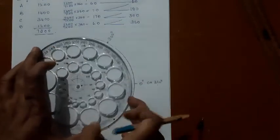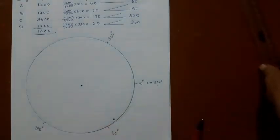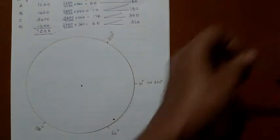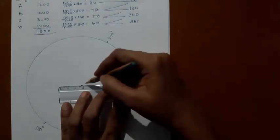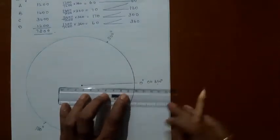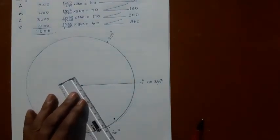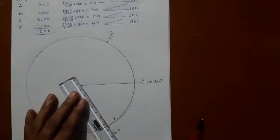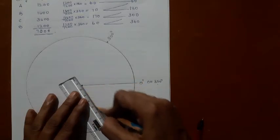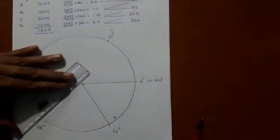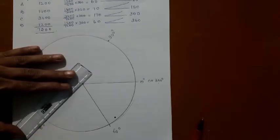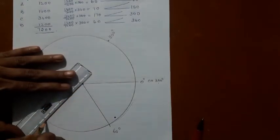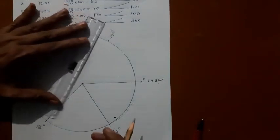Now join the points with the center. Draw a line from the center to the circumference of the circle where you have pointed. See, this is the point, and here.